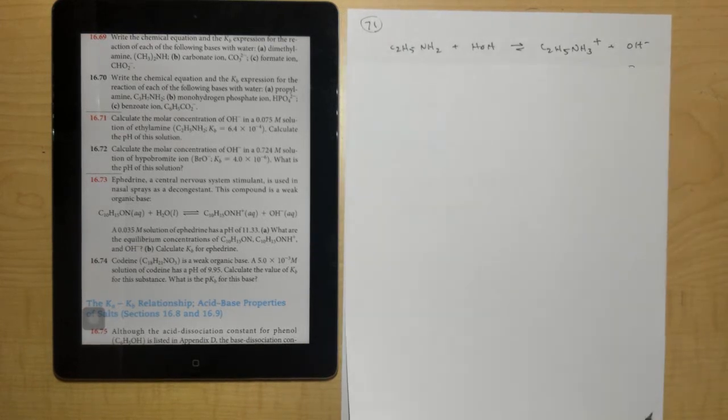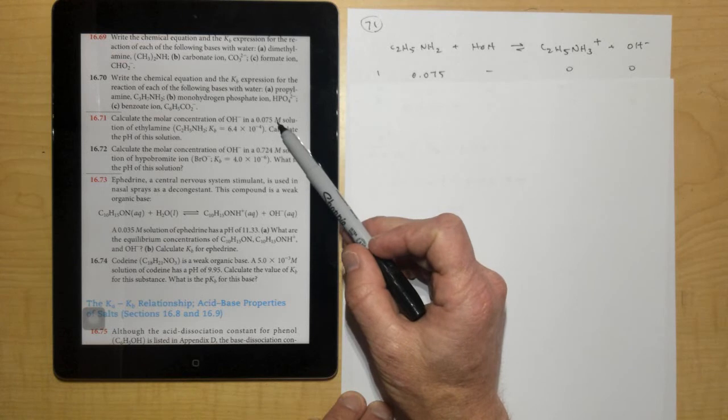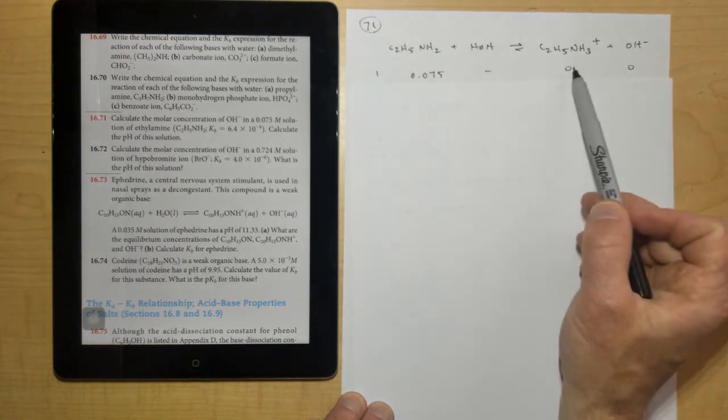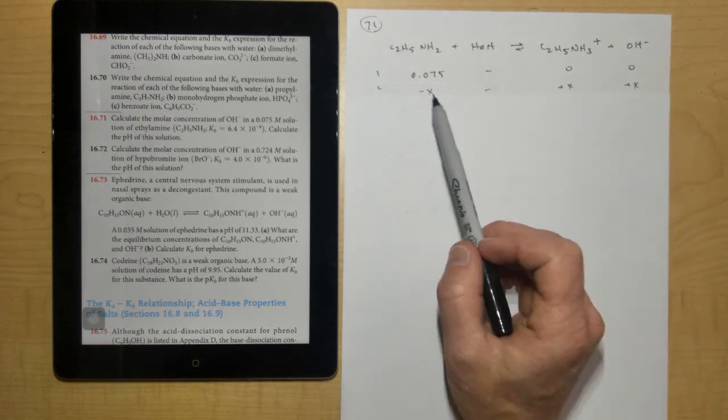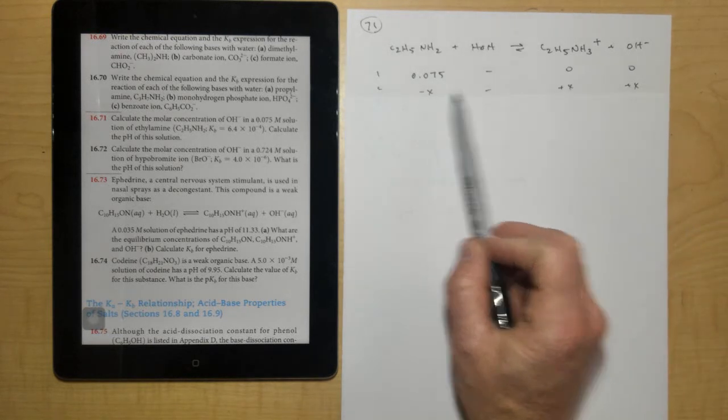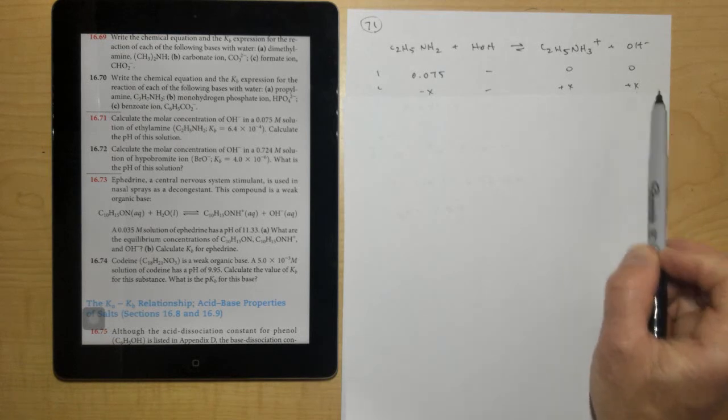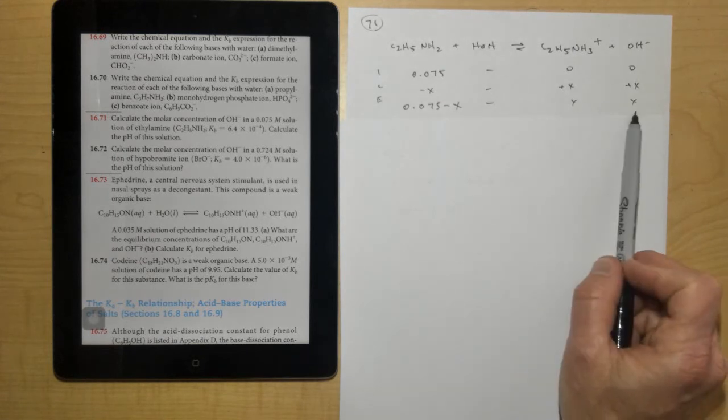Okay, so the next thing you want to do is draw an ICE table. So here's our initial, and it tells us in problem 71 the initial concentration is 0.075. Don't worry about water because it's pure liquid. And then 0 and 0 right here. Then the change is, we're going to lose a certain amount of this, we'll call it x, we'll gain a certain amount of this and gain a certain amount of this. And so then at equilibrium, we'll have 0.075 minus x, x and x.